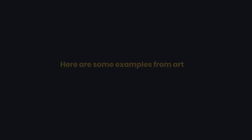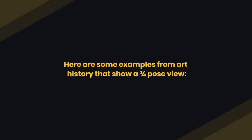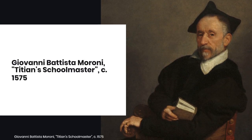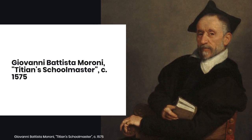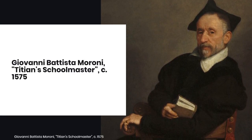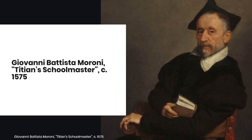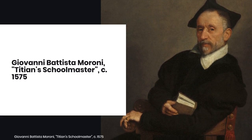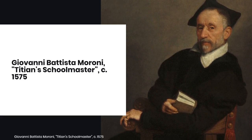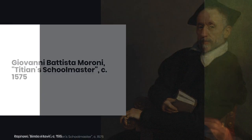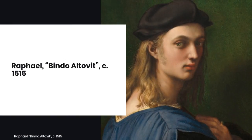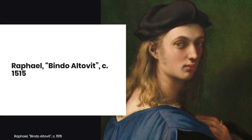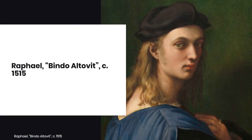Here are some examples from art history that show a three-quarter pose view. This painting is by Giovanni Battista Moroni and it's called Titian's Schoolmaster, created in 1575. And this portrait by Raphael is called Bindo Altevit, created in 1515.